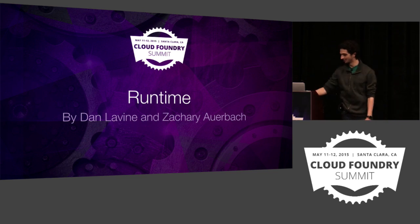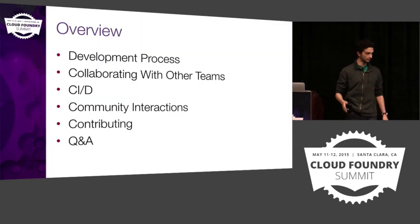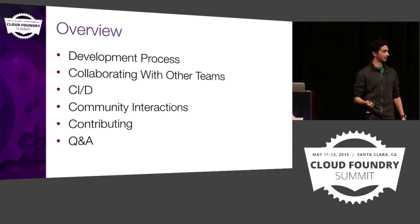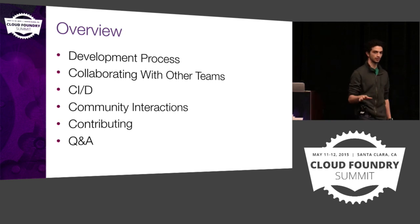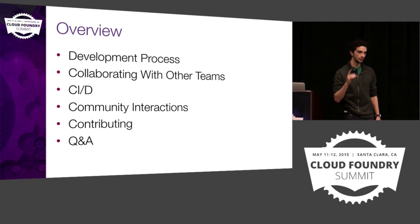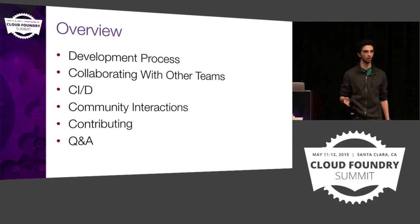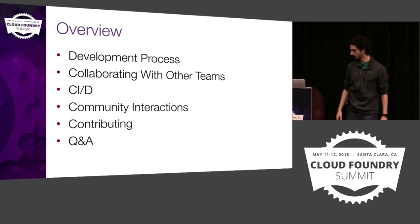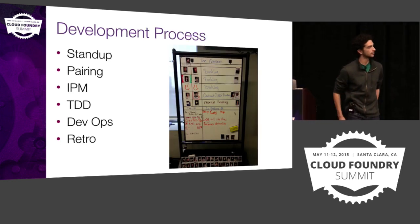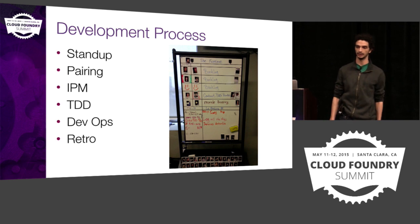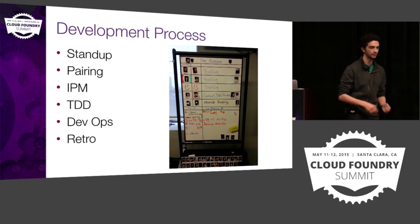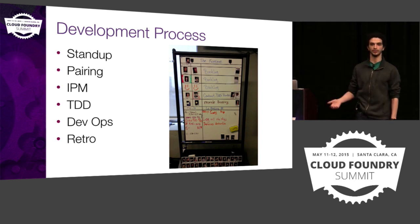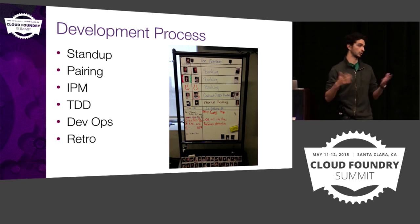Let's get started with a little bit of an overview. We're going to talk about our development process on the team, how we collaborate with other teams, our continuous integration and deployment, how we interact with the community at large, how you can contribute back, and hopefully at the end we'll have a few minutes for questions. Some of this is a day in the life of a Runtime team member, and some of this is overall Pivotal process and why we think it's a good thing.